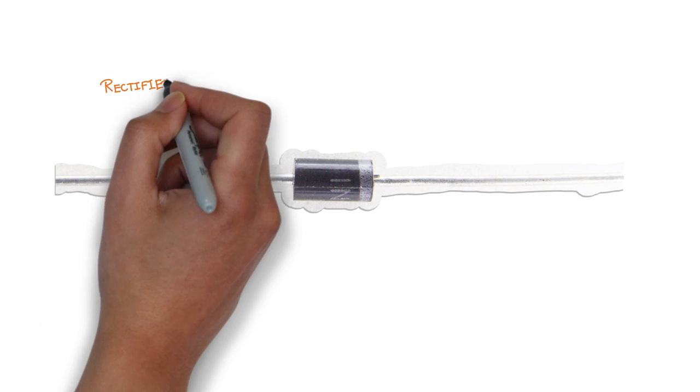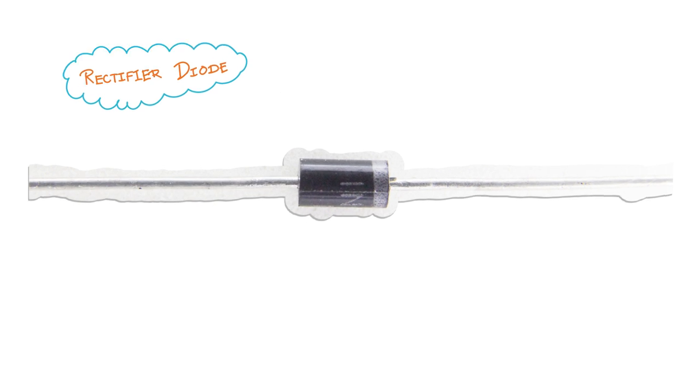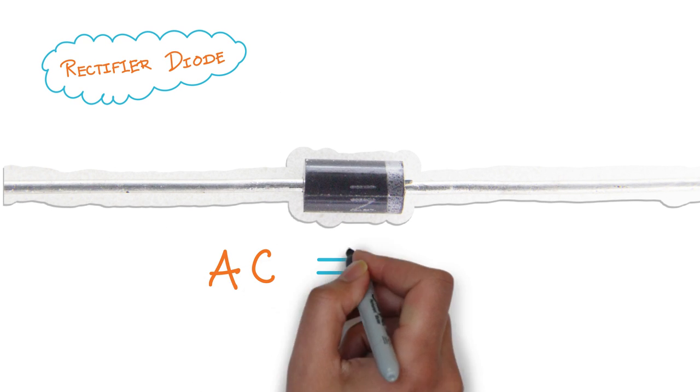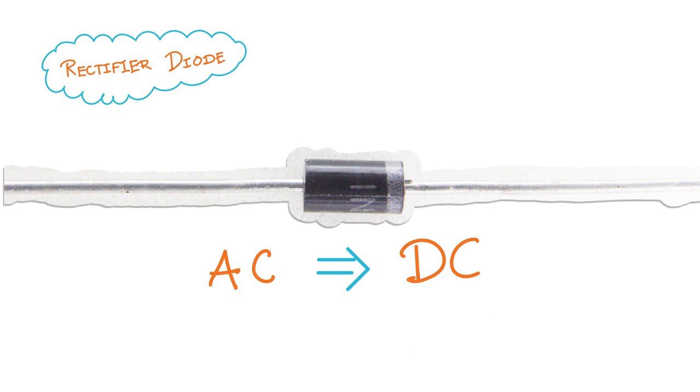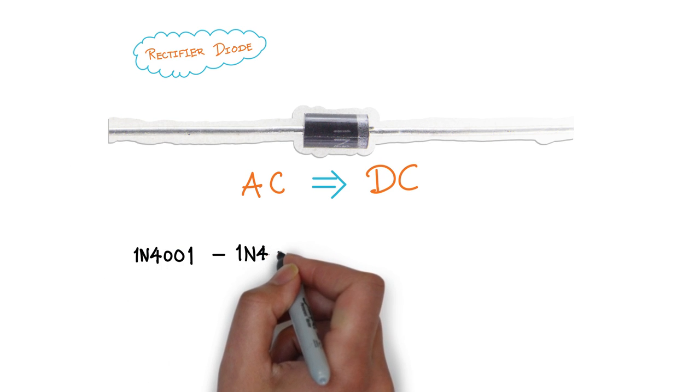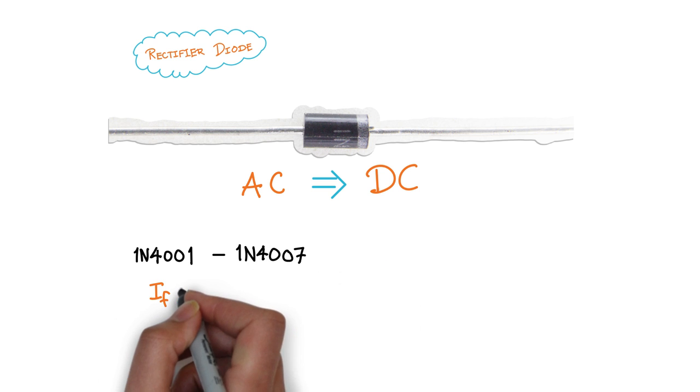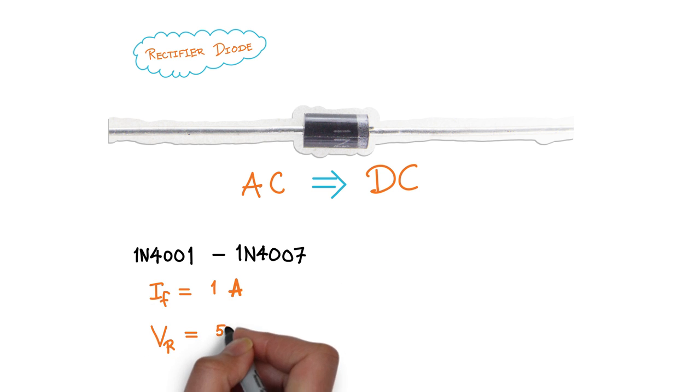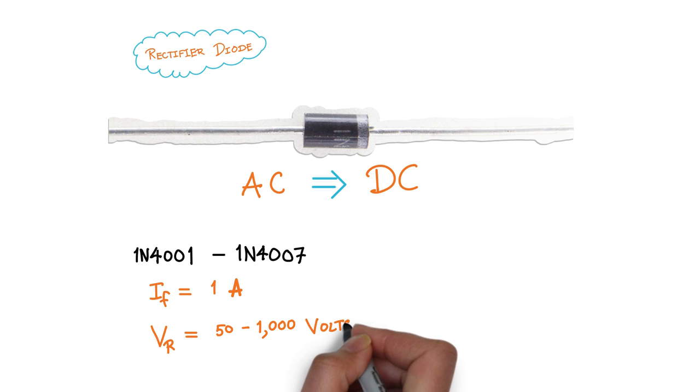Rectifier diodes. These are the type of diode you use when you want to convert alternating current into direct current. The most common ones are 1N4001 to 1N4007. They can handle higher current up to 1 amp. Their peak reverse voltage ranges from 50 to 1000 V.